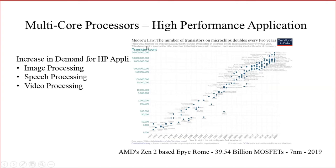Moore's Law states that the number of transistors on a particular microchip will be doubling every year. So due to technological advancements in the area of VLSI design, more and more transistors were combined into a single microprocessor chip, and the size of the transistors was also made very small.